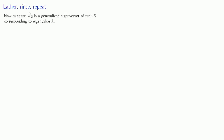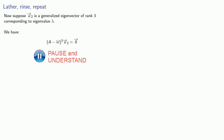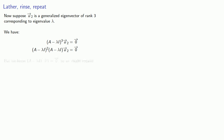Now suppose u2 is a generalized eigenvector of rank 3 corresponding to eigenvalue lambda. We have (A - λI)³ u2 equals the zero vector. We already know that (A - λI)² u1 is the zero vector, so we might require (A - λI) u2 to give us u1.